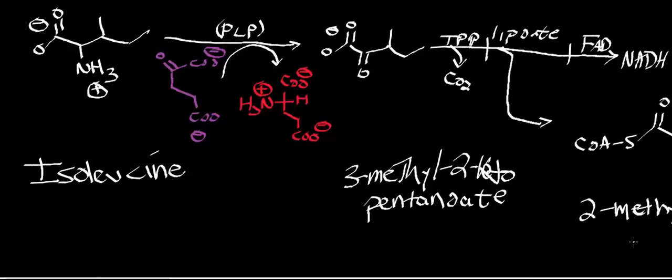Welcome back to the playlist on amino acid catabolism. We're going to finish up our catabolic pathways for branched-chain amino acids with isoleucine catabolism. Our first structure on the left is isoleucine. As mentioned in previous videos, the actual beginning of the pathways for all the branched-chain amino acids are identical, so it may be a bit repetitive.